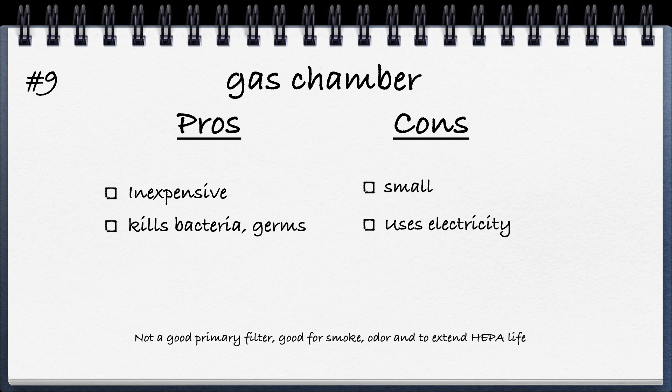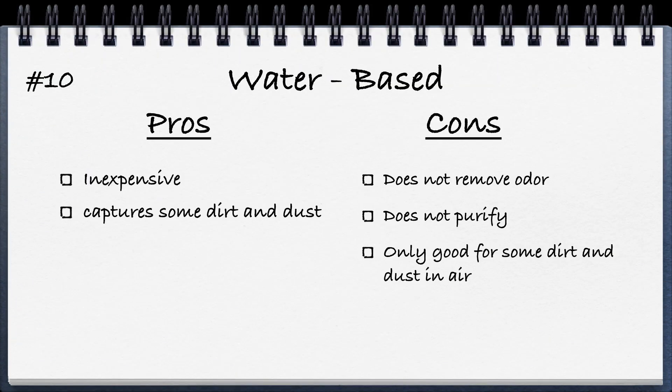Number nine is the gas chamber type — you don't see this much anymore. Pros: relatively inexpensive, can kill bacteria and germs. Cons: very small units, use a lot of electricity. Number ten is the water-based type. Pros: relatively inexpensive since you only replace the water every couple of days; can capture some dirt and dust by pulling air through water. Cons: doesn't remove odor or gases, doesn't really purify the air, can put too much moisture in the air, and units are really small — I don't recommend them unless you have a very tiny room.